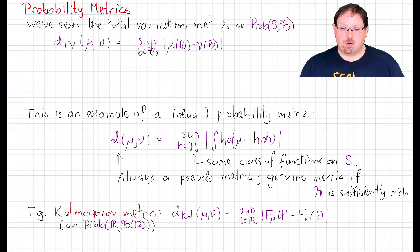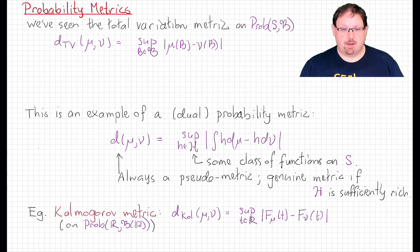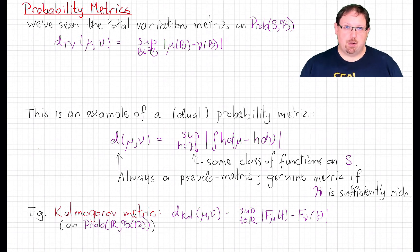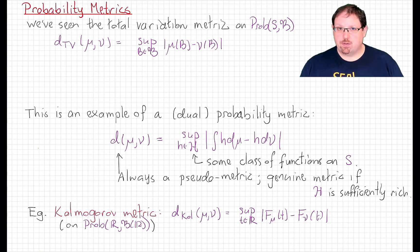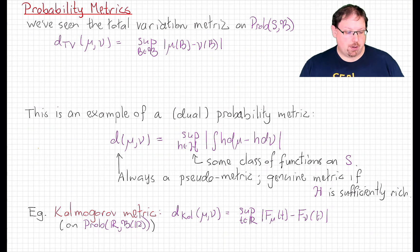For example, in the first Central Limit Theorem that we saw, where the input random variables are discrete Rademacher variables, the standardized sum — which is also a discrete, shifted binomial distribution — will have total variation distance 1 from the Gaussian for all finite stages of the theorem. So that's not going to work.